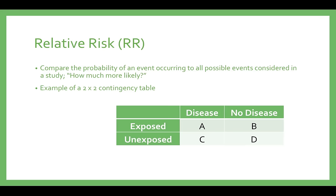Relative risk is used when comparing the probability of an event occurring to all possible events considered in a study. For example, consider the risk of developing lung cancer in those who are exposed and unexposed to secondhand smoke over a 10-year study period. Upon study conclusion, the 2x2 contingency table shown here is created containing frequency counts of events for two groups, exposed and unexposed to the secondhand smoke stimulus. This table provides all necessary data to calculate the incidence of the event for both exposed and unexposed individuals in a cohort study.